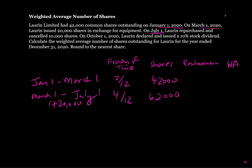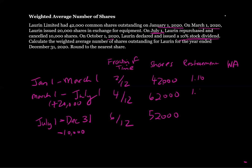Then on July 1st, Lauren repurchased and cancelled 10,000 shares, giving us 52,000 shares outstanding. The period from July 1st to December 31st is six out of 12 months. We also have the October 1st stock dividend, which is 10%, so we need to restate all the share numbers by multiplying them by 1.10.